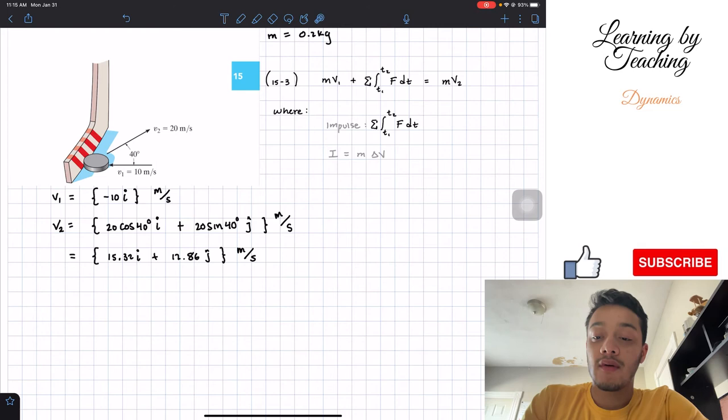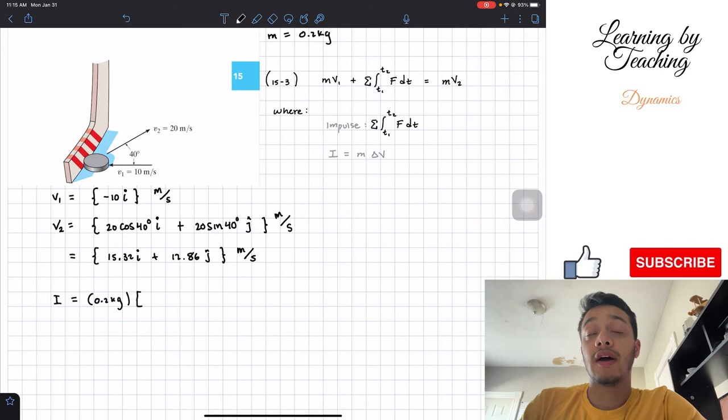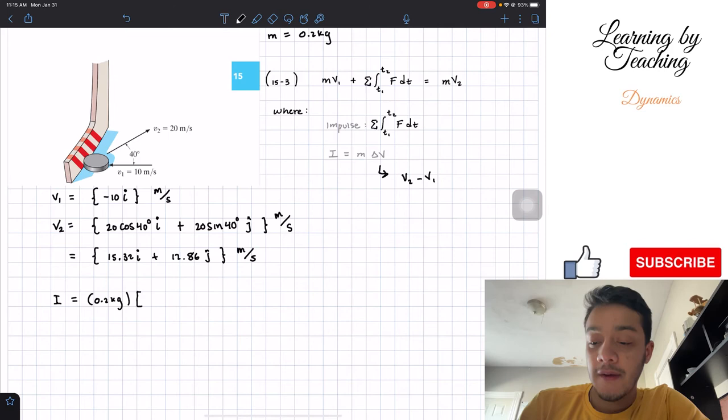Now we have v1 and v2. My impulse is going to be equal to the mass, 0.2 kilograms, given by the problem, multiplied by the change in velocity. This change can be written as v2 minus v1.